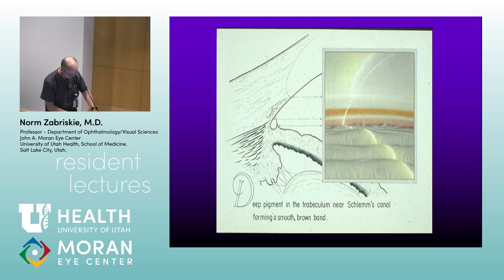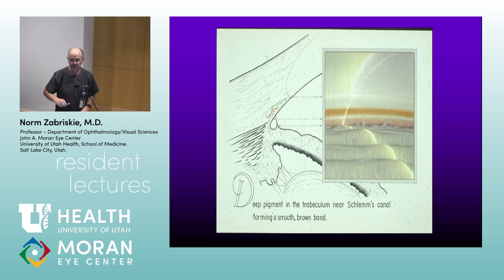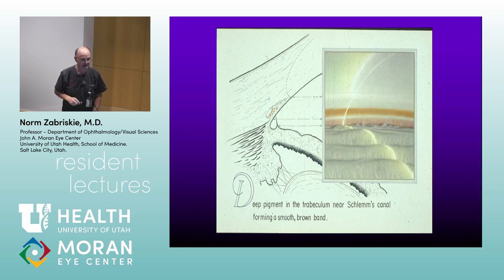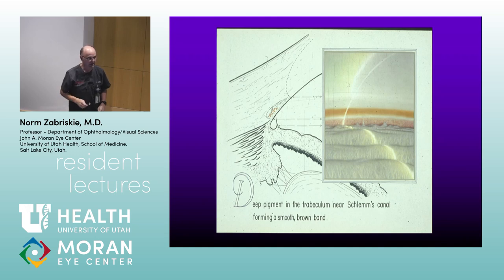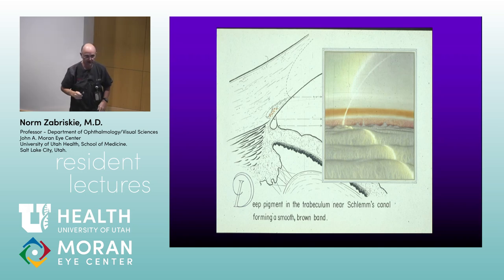The scleral spur, to me, kind of defines the angle being open. If you can see scleral spur — generally speaking — you've got an open angle. If you can see it 360 degrees, it's open. Below that is the ciliary body face. Those are the major landmarks of gonioscopy. So for open angle glaucoma, by definition we're dealing with open angle diseases. What instrument do most of you use for gonioscopy?